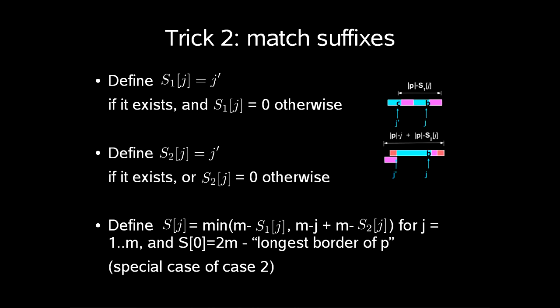The second trick is to match suffixes. We define s1[j] to be j prime if it exists, and s1[j] is 0 otherwise. Define s2[j] to be equal to j prime if it exists or s2[j] is set to 0 otherwise. We then define s[j] to be the minimum of m minus s1[j] and m minus j plus m minus s2[j] for j 1 up to m. And s[0] is 2m, the longest border of p, which is a special case of case 2. It's the amount we should increase i to get a point where the string matches the suffix seen so far.